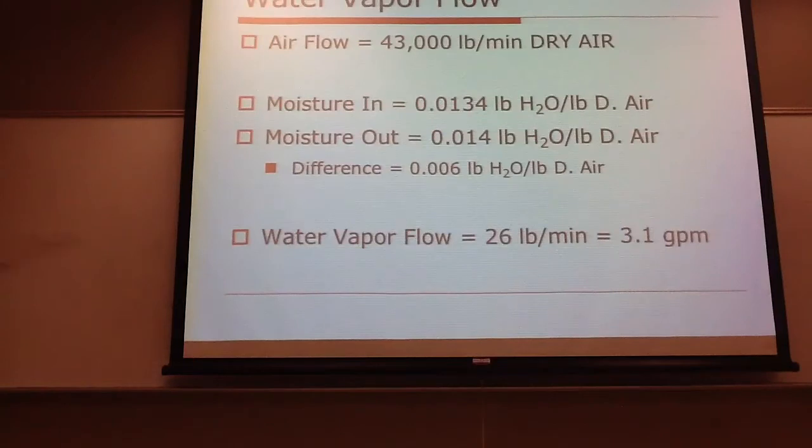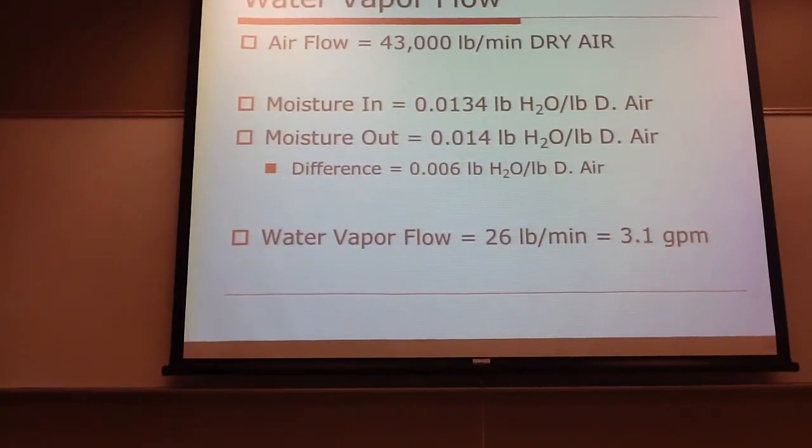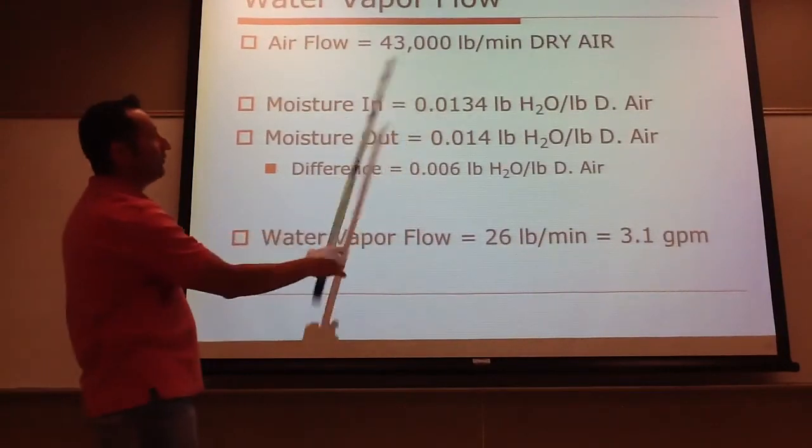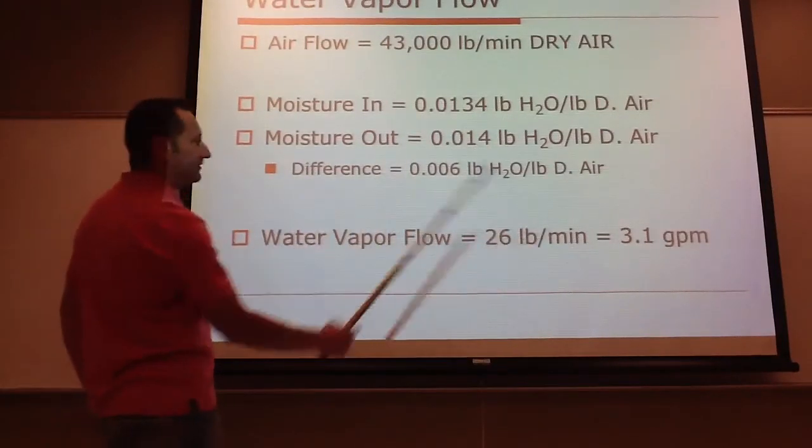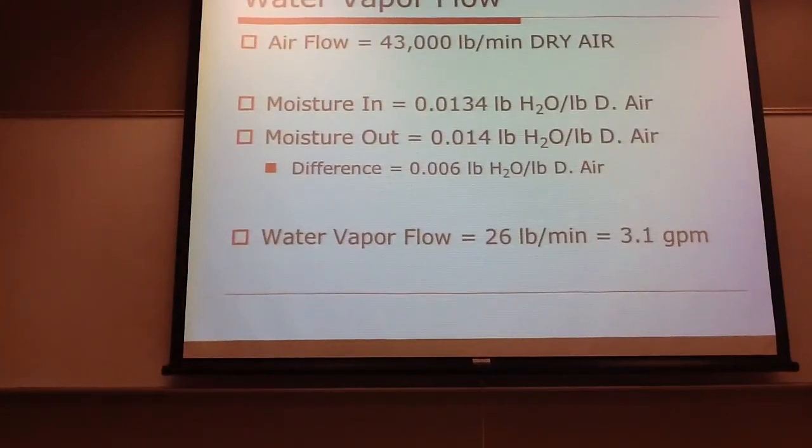From that, the air flow was 43,000 pounds per minute of dry air. Moisture in, as stated before, 0.0134 pounds of water per pound of dry air. The moisture out, 0.014 pounds of water per pound of dry air. And the difference is 0.0006 pounds of water per pound of dry air. And the water vapor flow, 26 pounds per minute or 3.1 gallons per minute.